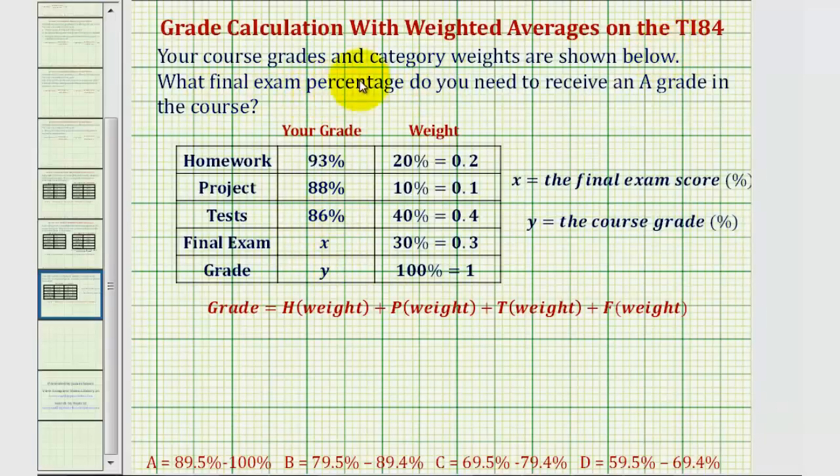Let's assume your course grades and category weights are shown below. For example, in the homework category, you have 93% and this category is weighted 20%. Your project grade is 88%, which is weighted 10% of your semester grade or course grade. Your test average is 86%, which is weighted 40% of your course grade.